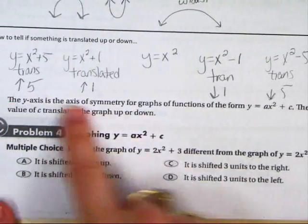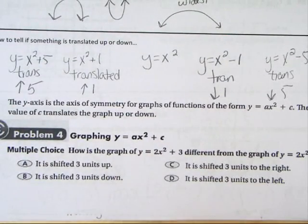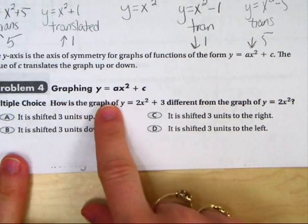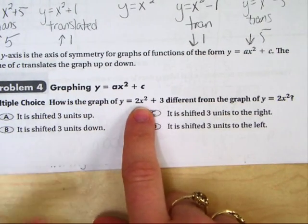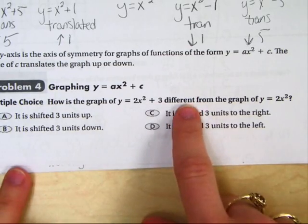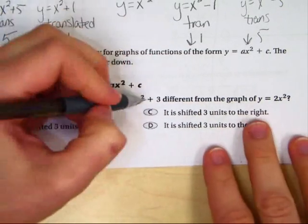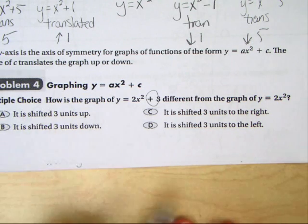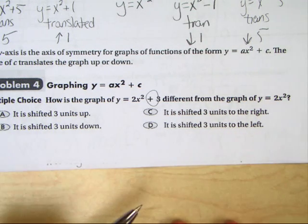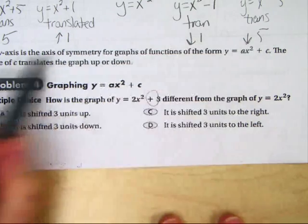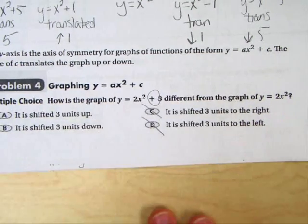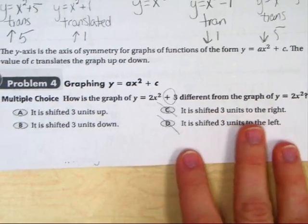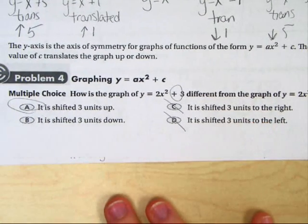And that's pretty much what this little sentence says. How is the graph of y equals 2x squared plus 3 different from the graph of y equals 2x squared? Well, notice the only thing they did was they added that 3 in there. Well, if you add the 3, is that going to shift it up or down, or left or right? Well, we already talked about it just being up and down, so let's get rid of options C and D. And since it's a plus 3, that means it's going up 3 units.